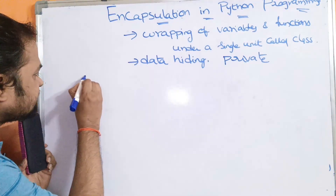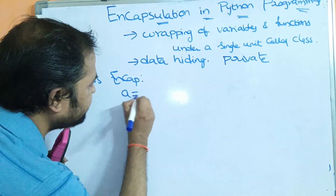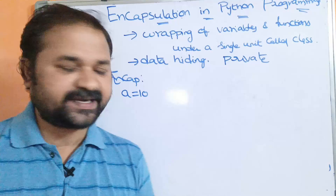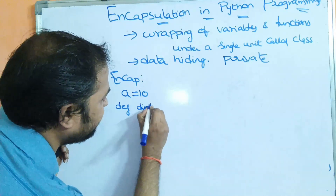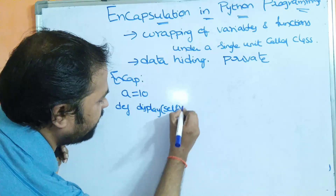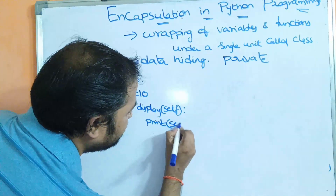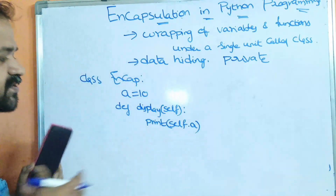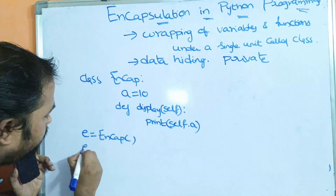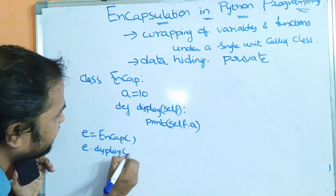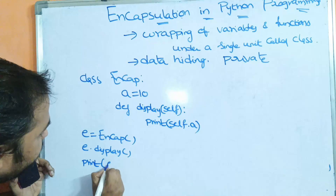Let we have a class called ncap. Here we have a variable called a whose value is 10. Next, let us define a function. Let the name of the function be display. We must pass self as the parameter. Let us display a value now. So, print of self.a, since a is an instance variable. Now, let us create an object for the class. So, e is equal to ncap. With the help of the object, use the display method as well as access that variable. So, print of e.a.